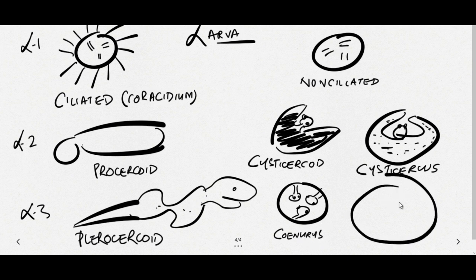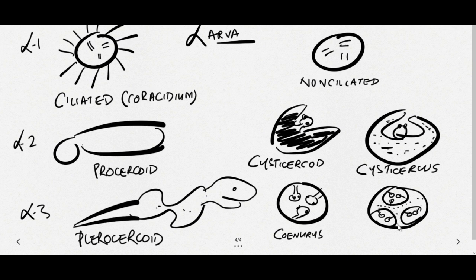And hydatid cyst which is seen in case of Echinococcus granulosus. Here you will see lots of big cystic structures having lots of many scolices within them. So this is the biggest larval form that you can see. So these are different larval forms in case of Pseudo as well as Cyclophyllidean cestode. So I hope the differences are clear.